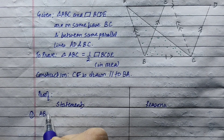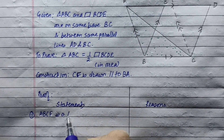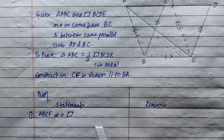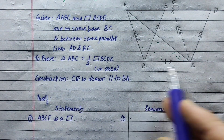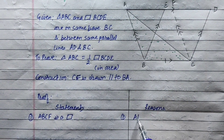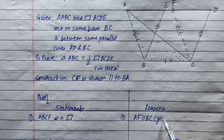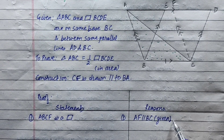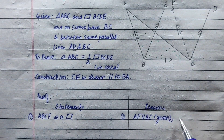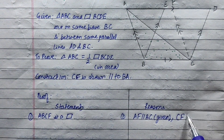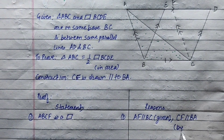ABCF is a parallelogram. This is because AF is parallel to BC, which is given. And CF is parallel to BA by construction.